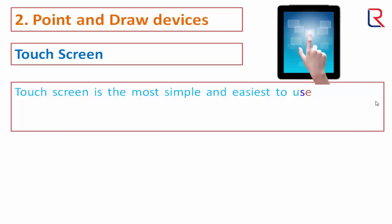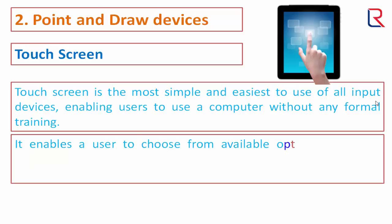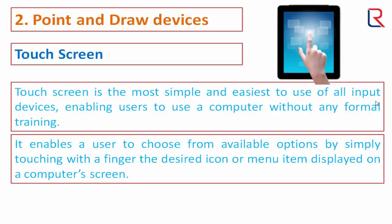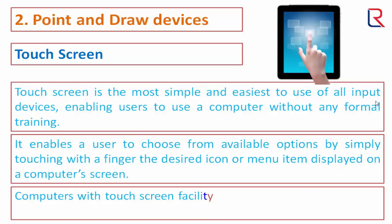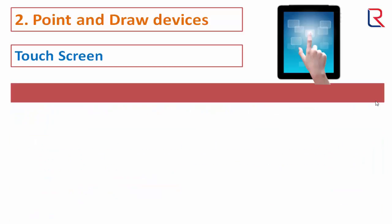Touch screen: a touch screen is the most simple and easiest to use of all input devices, enabling users to operate a computer without any formal training. It enables a user to choose from available options by simply touching with a finger the desired icon or menu item displayed on the computer screen. Computers with touch screen facility use optical sensors which can detect the touch of a finger on the screen.